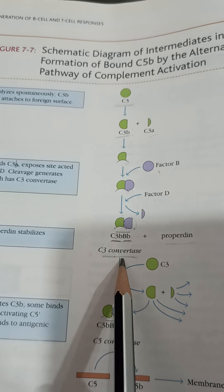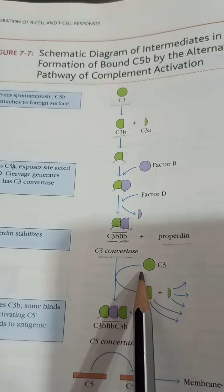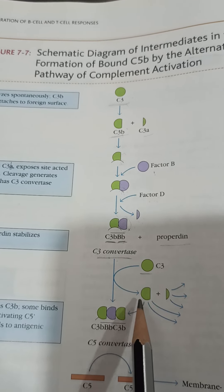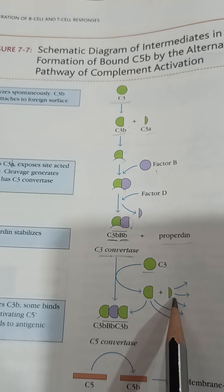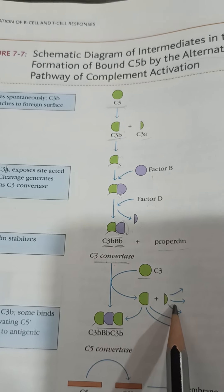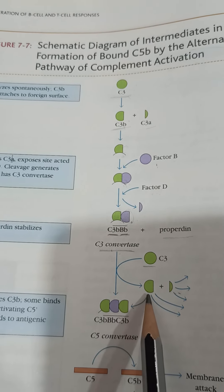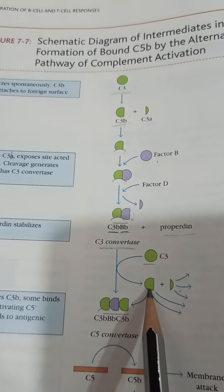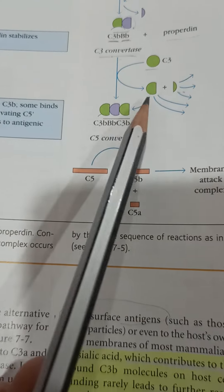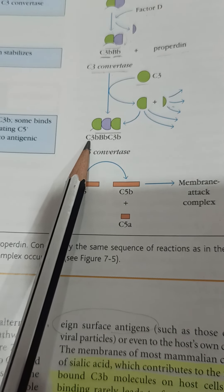This C3 convertase is stabilized by properdin. This C3 convertase can now rapidly convert many more molecules of C3 into a larger fragment and a smaller fragment. When C3 undergoes cleavage and more molecules of C3 undergo cleavage, the larger fragment of C3 again joins this C3 convertase.